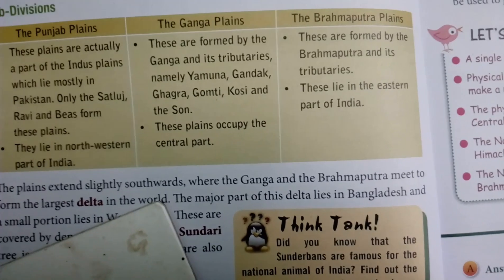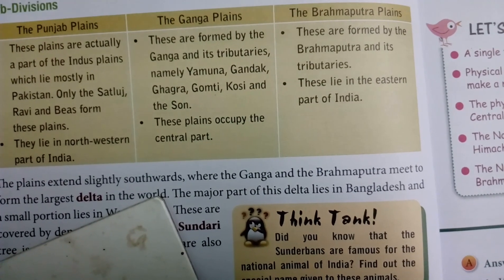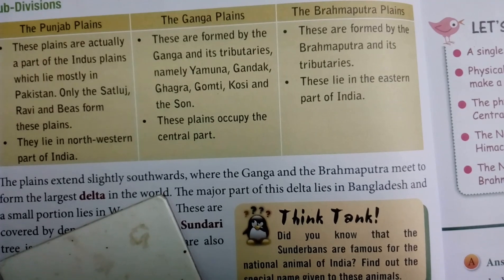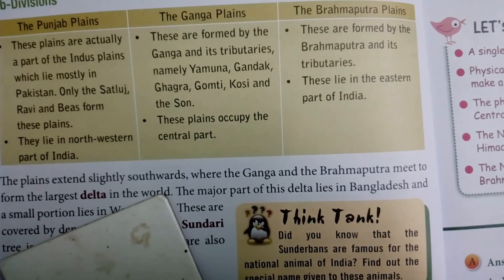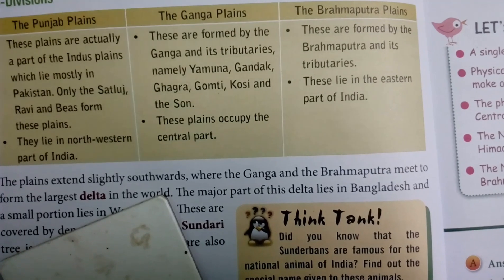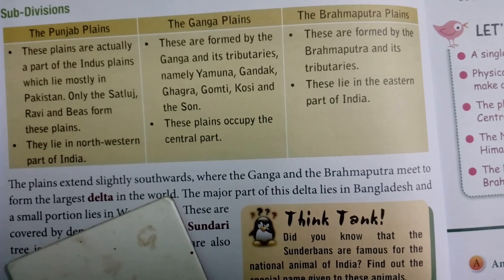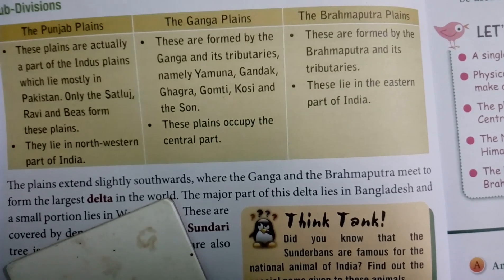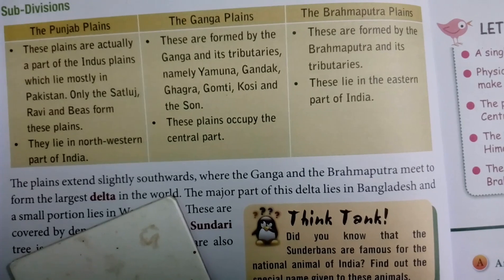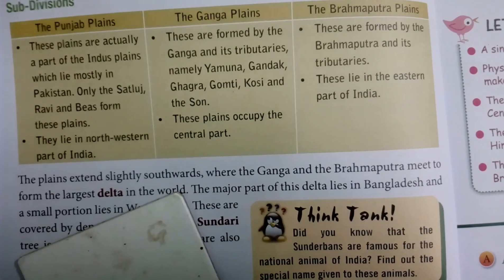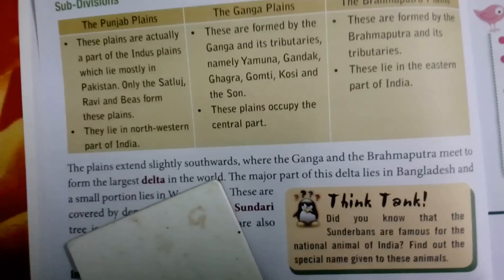The Brahmaputra Plains are formed by the Brahmaputra and its tributaries. These plains are named after the river Brahmaputra and lie in the eastern part of India.